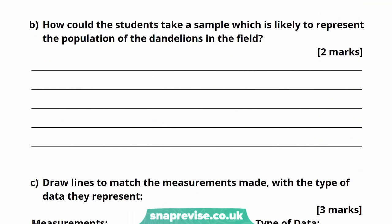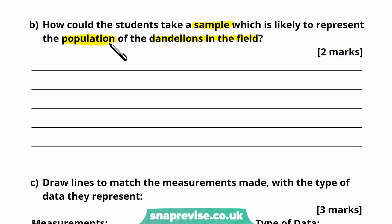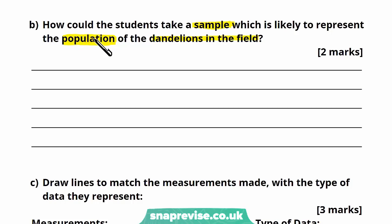Part B asks how the students could take a sample likely to represent the population of dandelions in a field. The whole purpose of this practical topic is that we take samples because studying the whole population is too time-consuming and difficult. A sample should be representative of the population so we can understand its characteristics without studying every individual — just as in human disease research, we study groups across different ages, heights, weights, and backgrounds.